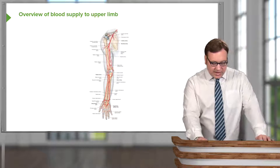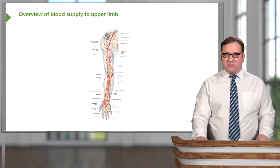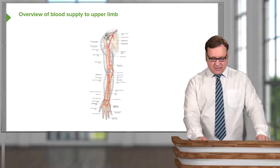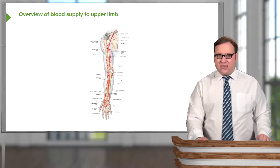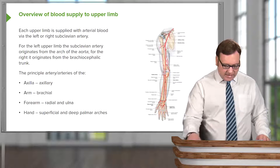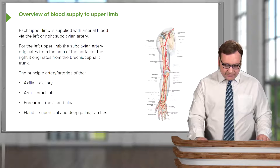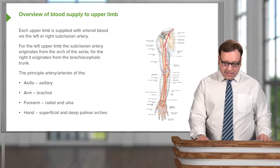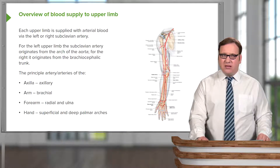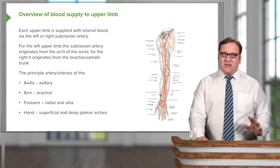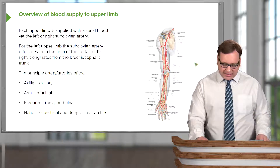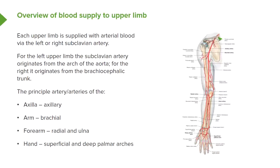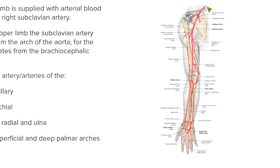Here we can see a nice overview of the blood supply to the upper limb in this diagram. It is a right upper limb, and we're looking at the anterior surface. We can see that each upper limb is supplied with arterial blood coming primarily from either the left or the right subclavian artery. Here we can see above the clavicle we have the subclavian artery.